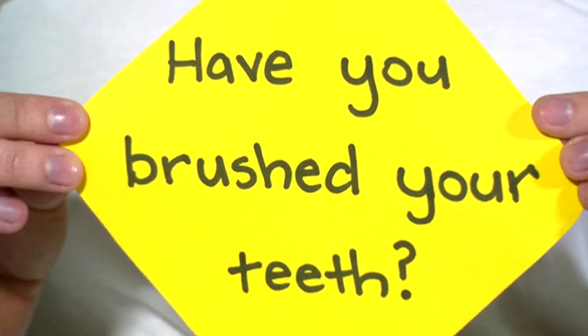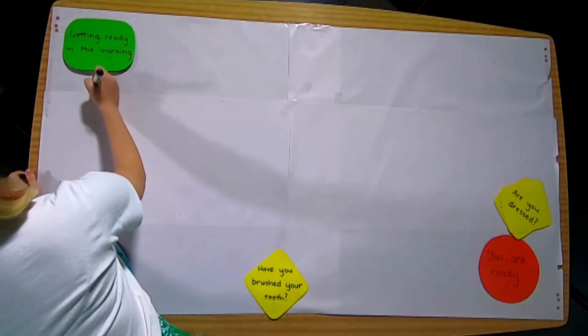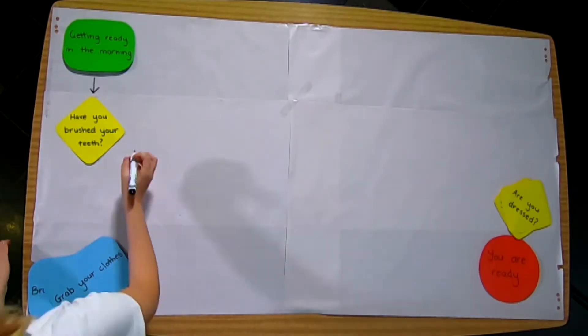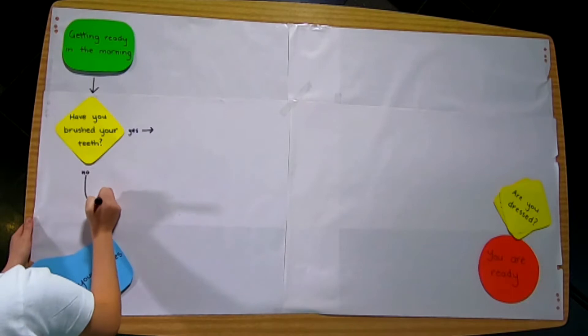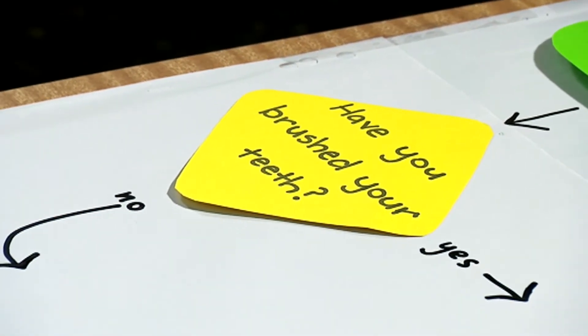We represent this decision-making part of the process with a diamond box. We can see the arrow coming into the box and two arrows coming out of the box — yes and no. Remember that a decision block should only ever have a yes or no outcome, meaning the question inside the box should only have two possible answers: yes or no.